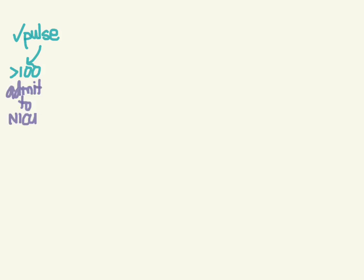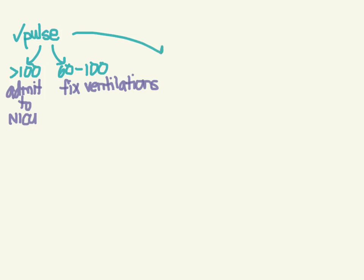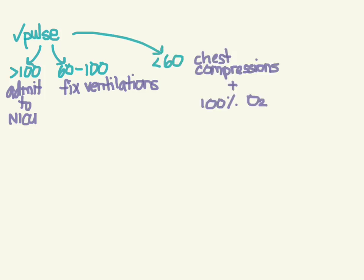What if it's not greater than 100? If it's between 60 and 100, we need to improve our ventilations. If it's even lower than that — persistent bradycardia — now it's time to up our game: we're going to do chest compressions and switch from room air to 100% O2.